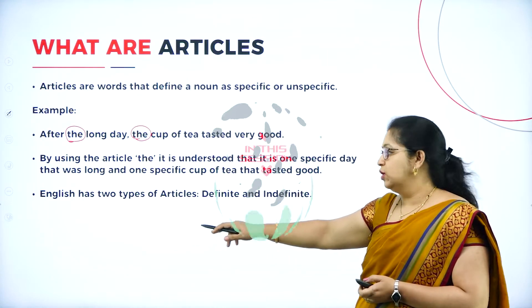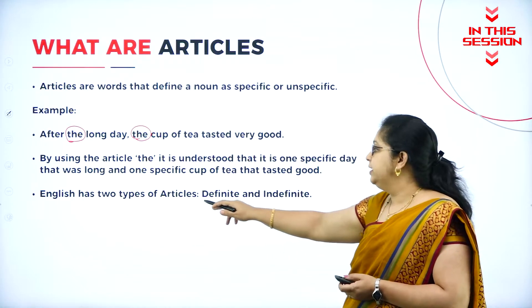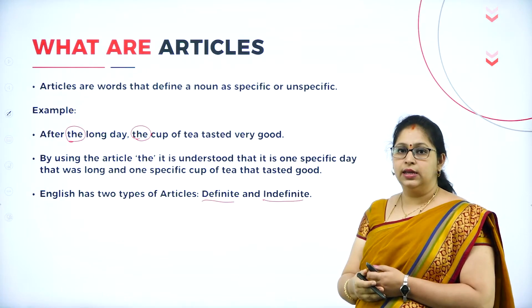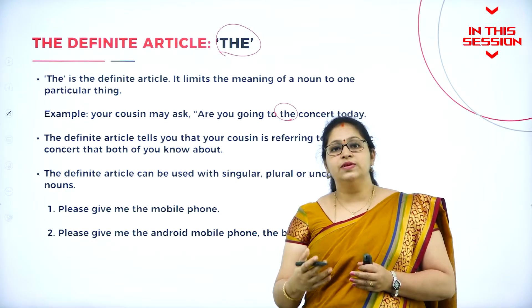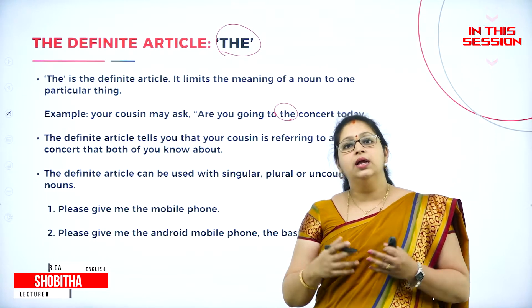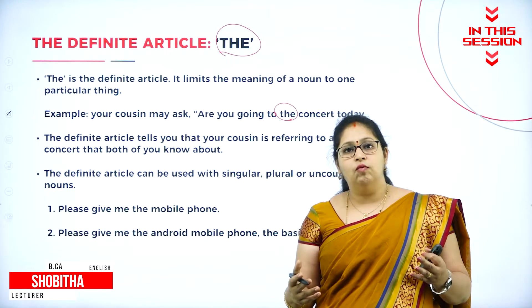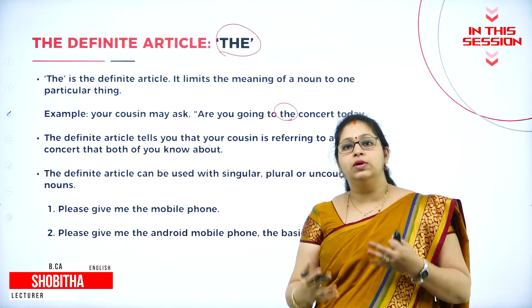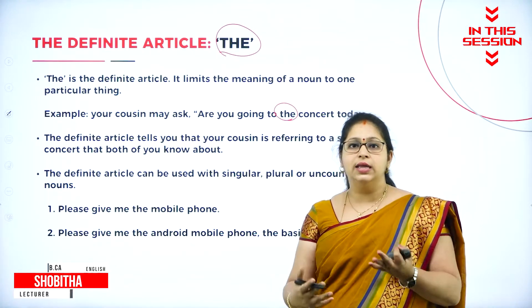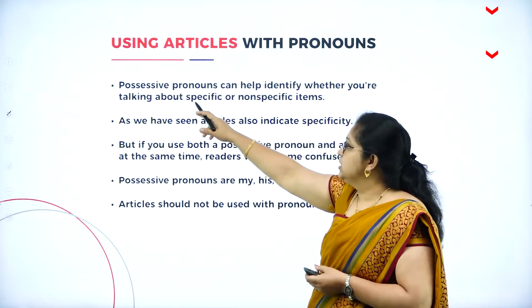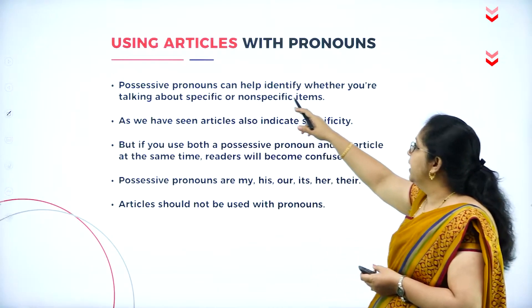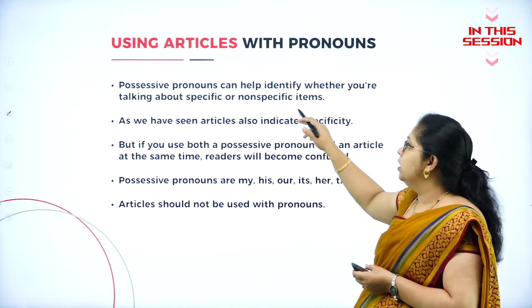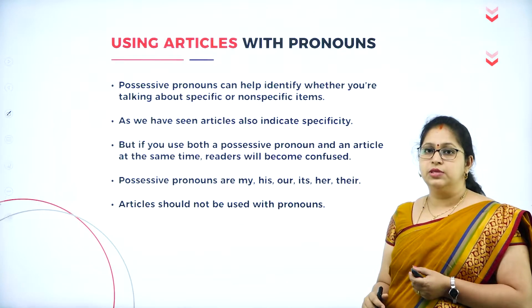English has two types of articles: definite article and indefinite article. The nouns which cannot be counted, which are big in volume and impossible to count, are called uncountable nouns. Possessive pronouns can help identify whether you are talking about specific or non-specific items.